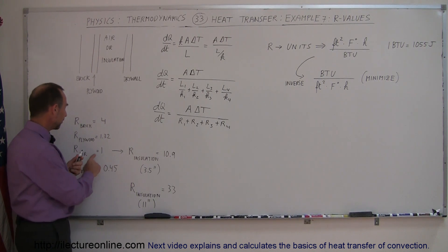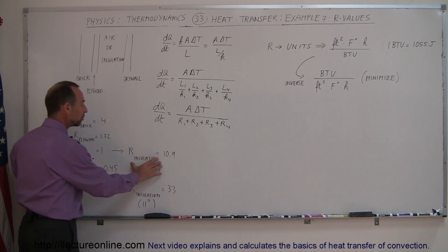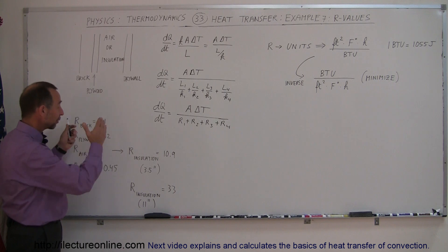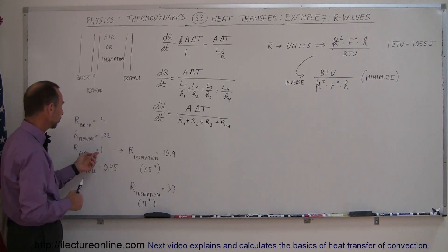Now notice that instead of air, if you use insulation material 3.5 inches wide, the R-value for that alone is 10.9. So it would definitely increase the R-value of our wall by quite a bit if you replace air with the insulating material.